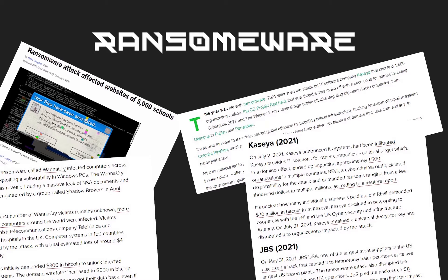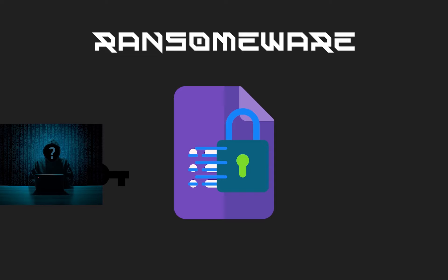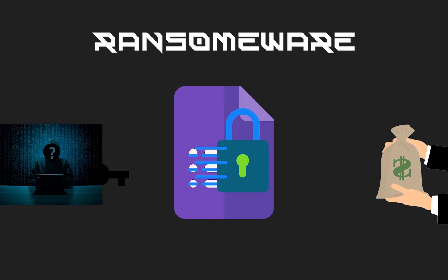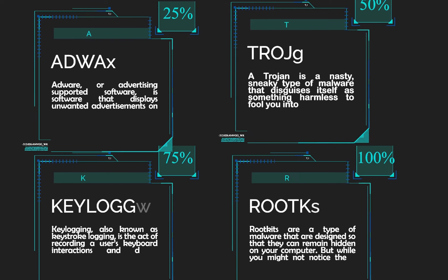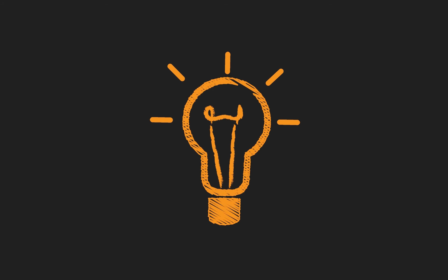Then there's ransomware, which got quite popular in the past few years. It locks and encrypts your files with a special key that only the attacker has, and then they demand money in exchange for the key. But there's a catch — even after you give them the money, there's no guarantee that you'll get the files back. There are some other malware types as well, like adware, trojan, keylogger, and rootkit. You can pause the screen to read more about them.